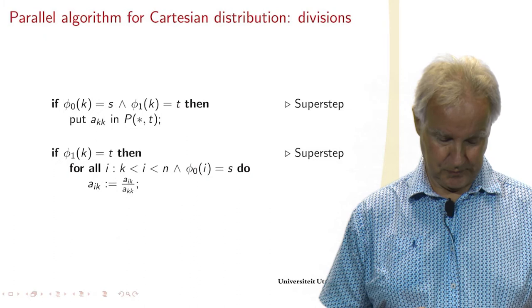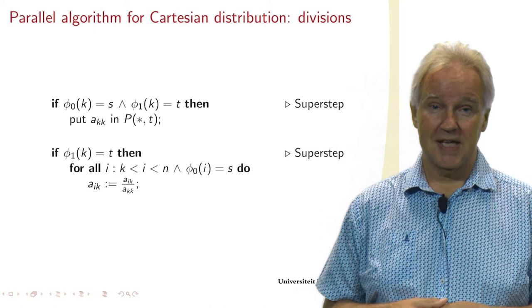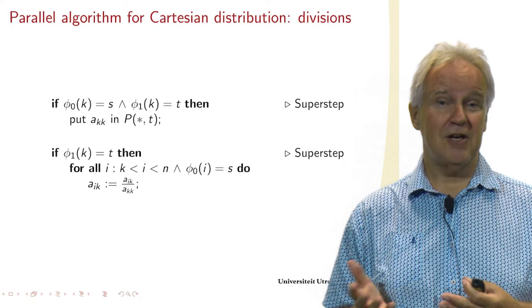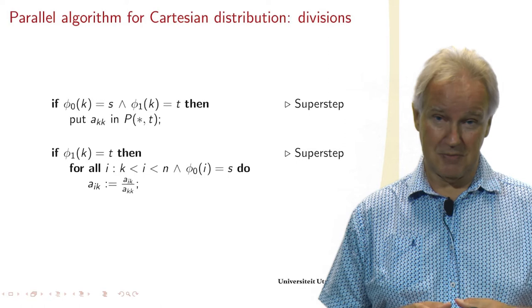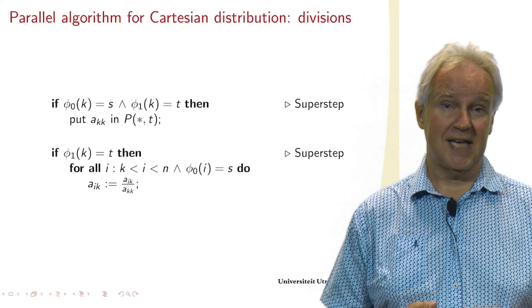If we have a Cartesian distribution, then we can use this to formulate our algorithm. Thinking of the sequential algorithm, where we just divided all the elements of column K, all the elements AIK by the diagonal element.